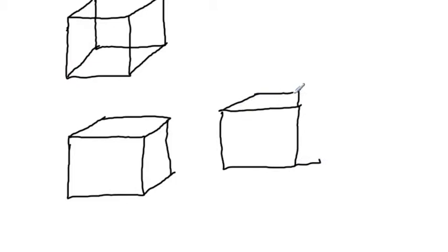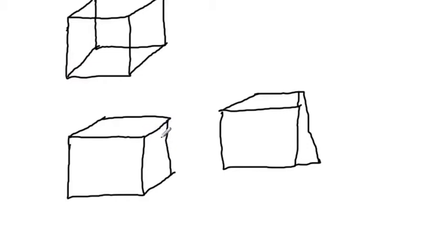If you don't keep the angles the same, it really doesn't look like a cube. So it's really important to keep each angle as close to the others as you can. One way to do that is to lay your pencil down on one line, then slide it over keeping that same angle to get a visual reference, and draw each line that way.